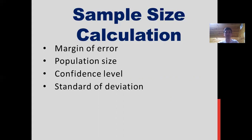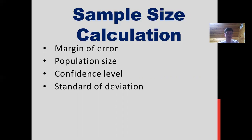When determining sample size, there are four main things to consider. The margin of error, also known as the confidence interval — there is no perfect sample, so you have to decide how much error to allow. It determines how much higher or lower than the population mean you're willing to let your sample mean fall. You'll often see this with political polling, where a poll may say 55% of the population agrees with Proposition A with a margin of error of plus or minus 5%. Population size refers to how many total people fit your demographic. The confidence level — common intervals are 90%, 95%, and 99% — is how confident you want the actual mean to fall within your interval.